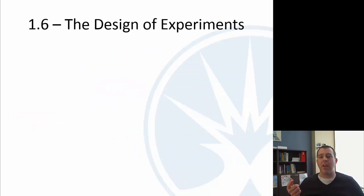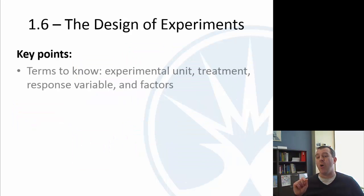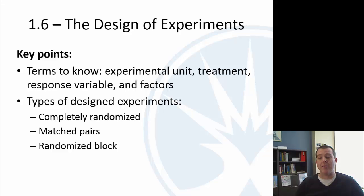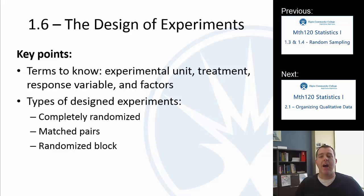So for designed experiments, the key vocabulary terms you need to know are: experimental units, treatment, response variable, and factors. And we had three types of designed experiments: completely randomized, matched pairs, and randomized block. That's it — thanks for watching. Check out the previous video or the next one linked above. If you have any questions, feel free to post them below — you can note the time, for example 2:52 would be 2 minutes and 52 seconds — and I will respond as best as I am able. Thanks for watching.